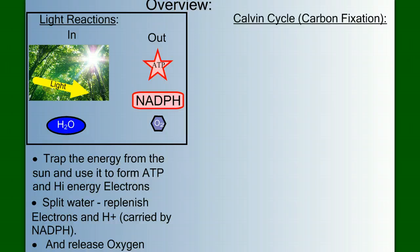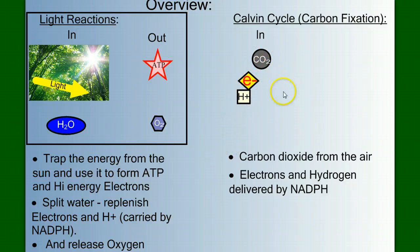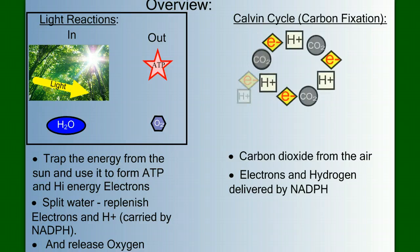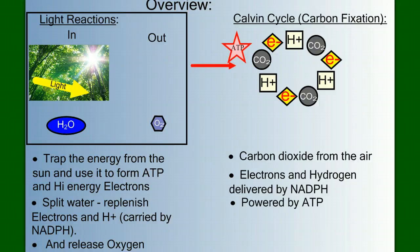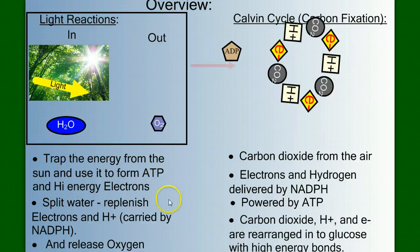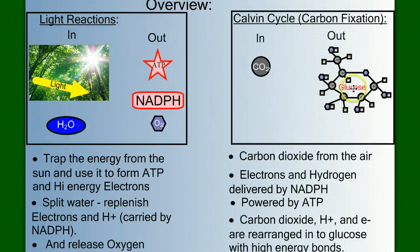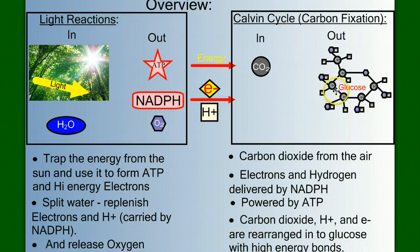Now let's move on to the Calvin cycle, or carbon fixation. We take in carbon dioxide from the air. Delivered to the Calvin cycle from the light reactions are high-energy electrons and hydrogens carried by NADPH. We have all the products we need to make glucose: carbons, oxygens, and hydrogens, plus high-energy electrons to tie them together. But we need a power source — energy that comes from ATP. ATP is going to drive the reactions of the Calvin cycle, rearranging these molecules into the high-energy bonds of glucose. So we can summarize the Calvin cycle as taking in carbon dioxide and producing glucose, but it needs the energy from ATP and the high-energy electrons from NADPH.